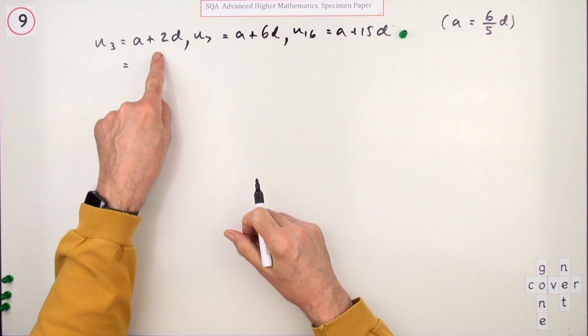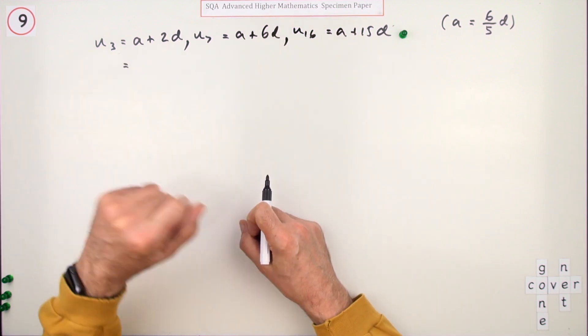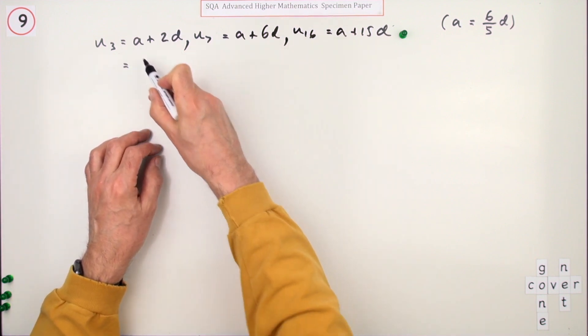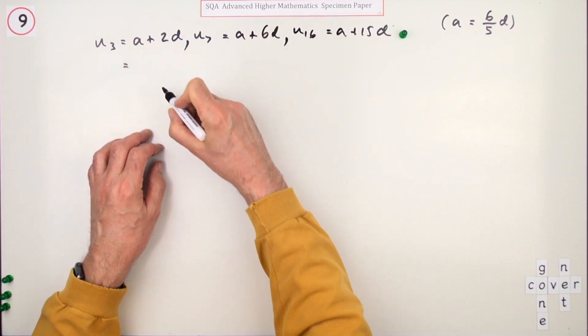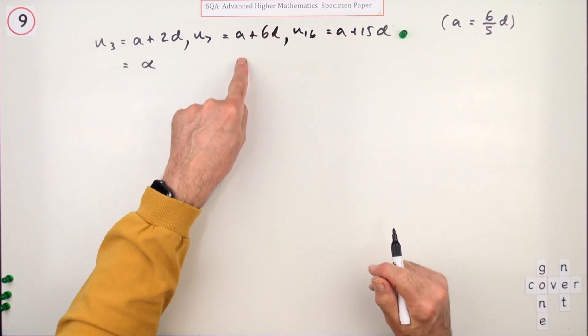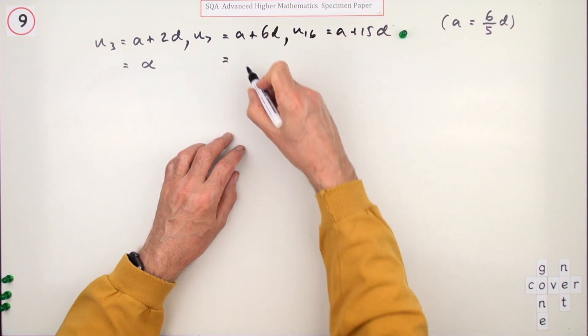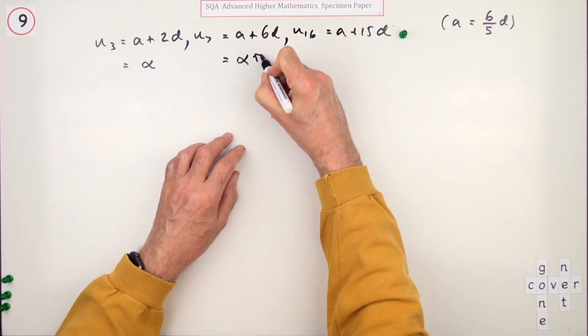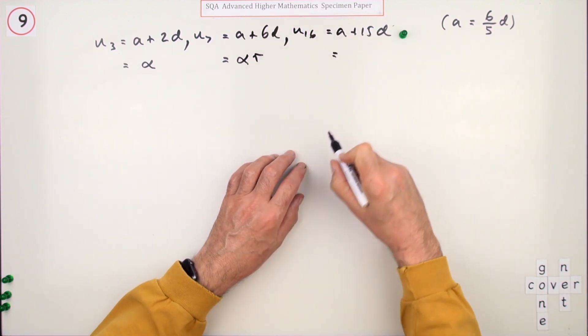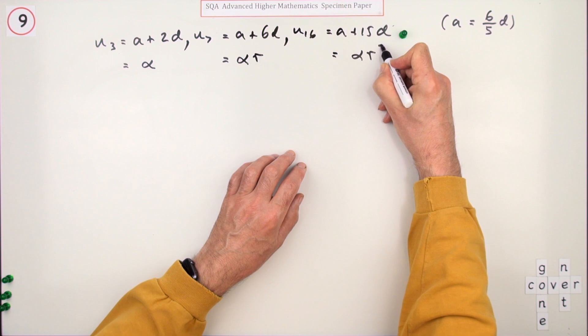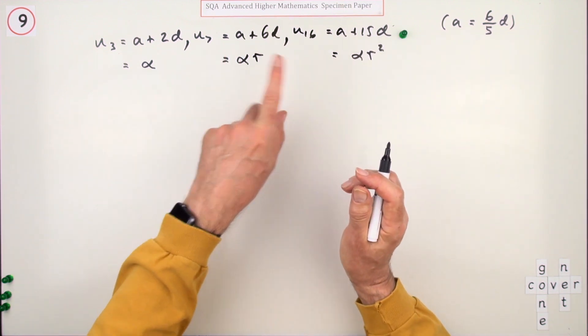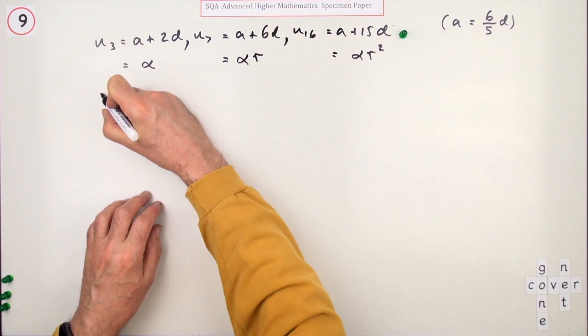If that's the first term of the geometric sequence, I'll call that alpha. The second term would be alpha times r, and the third term would be alpha r squared. So dividing these two should provide the same result as dividing these two, which is r.